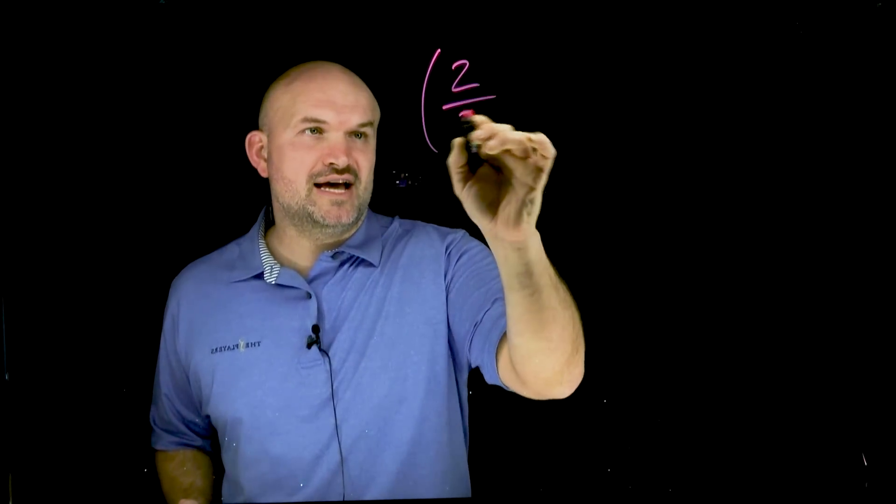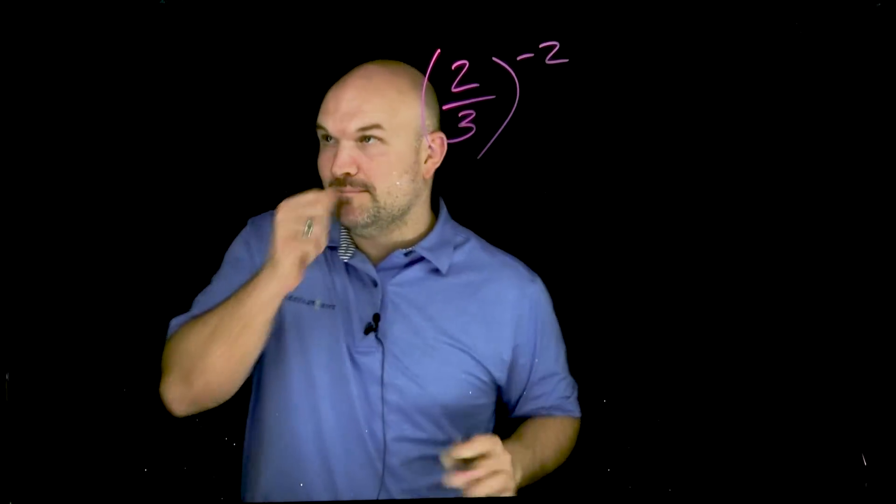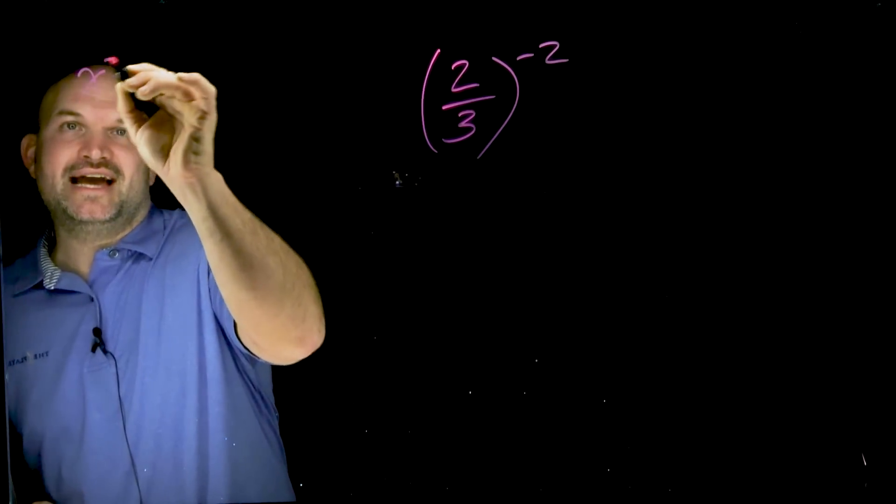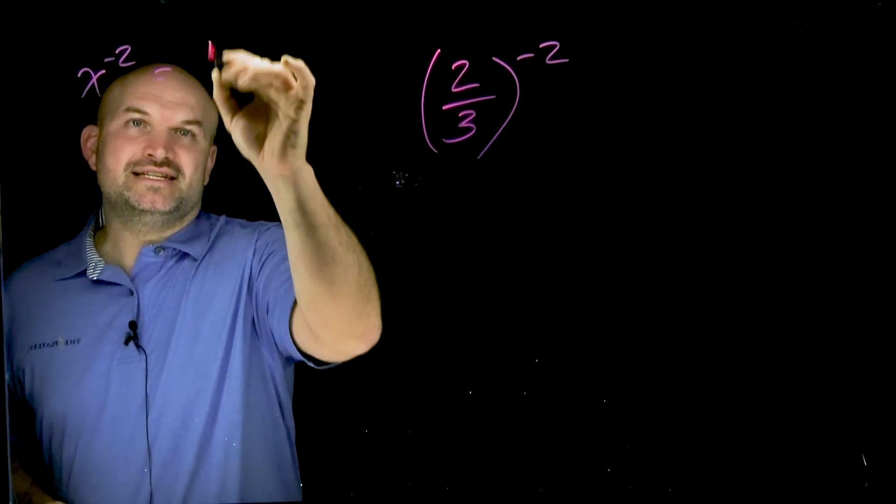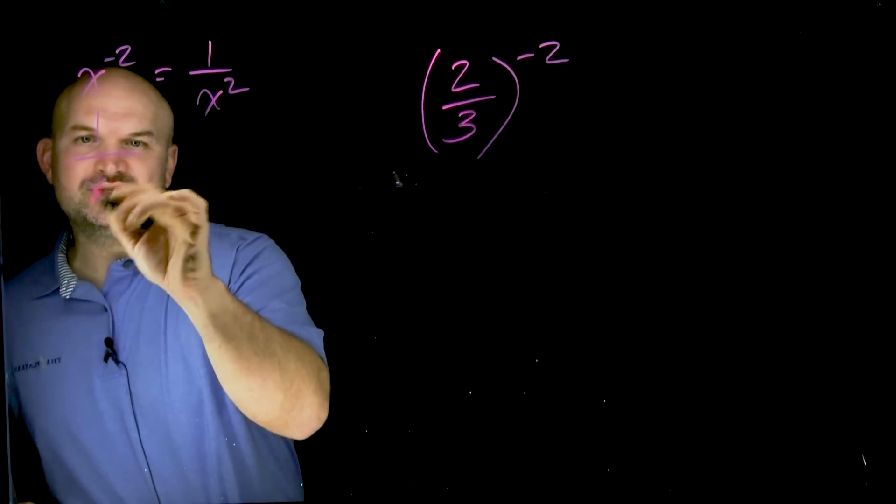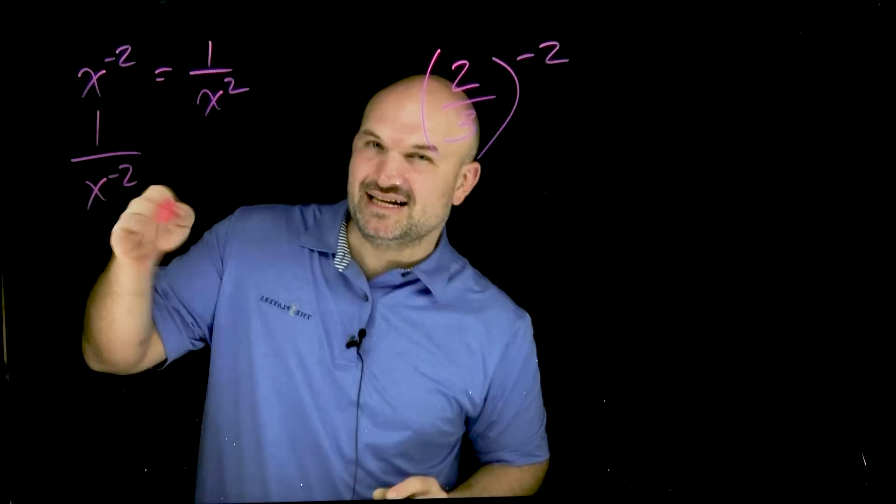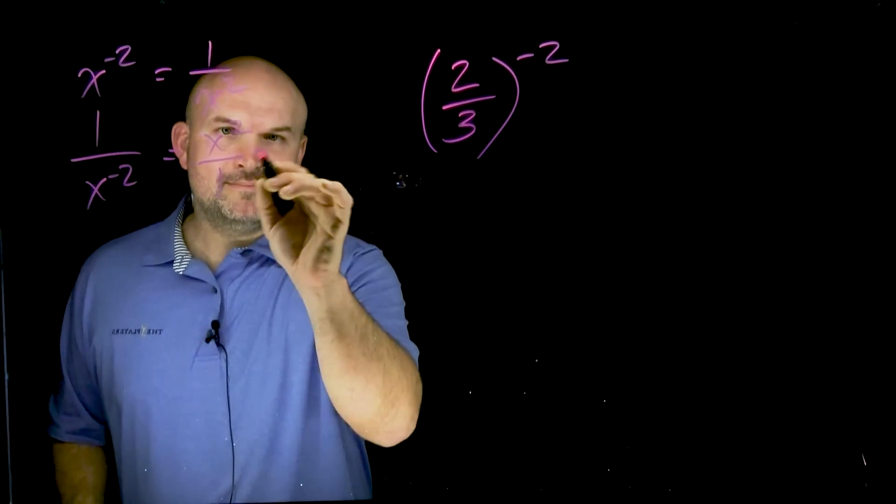The first one is when you have a fraction raised to a negative power, such as 2 over 3 raised to the negative second power. Most students remember that if I have x to the negative second power and I wanted to make that positive, you just put this in the denominator, so it'd be 1 over x squared. And sometimes this one gets confusing for students, but they usually remember it. If you have a negative in the denominator, just put it in the numerator and now it's going to be positive.